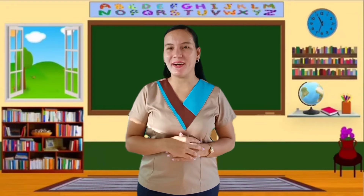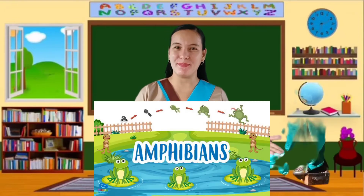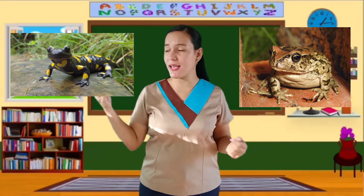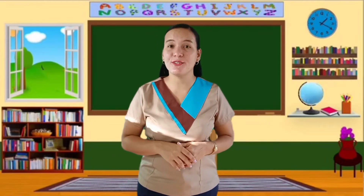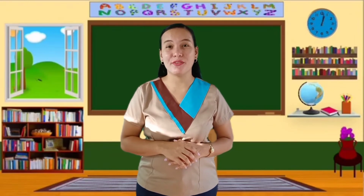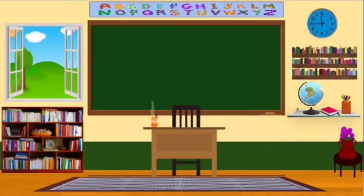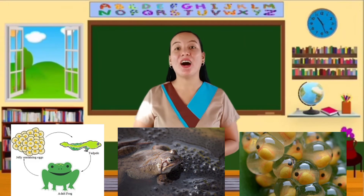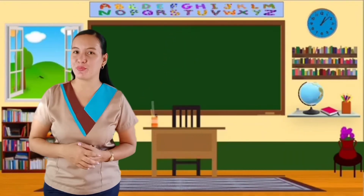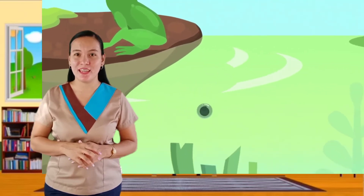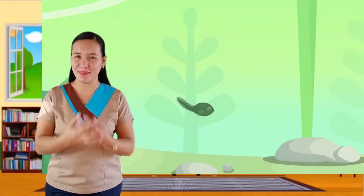Now let's talk about the distinguishing characteristics of amphibians. Frogs and salamanders are examples of amphibians. Can you describe their body covering? Yes, they have smooth and moist skin. Amphibians do not drink water — they absorb it through their skin. Look at these pictures. How do you think amphibians reproduce? Yes, amphibians reproduce by laying eggs. Amphibians lay eggs that do not have shells or membranes, so to prevent water loss, they have to lay their eggs in water.